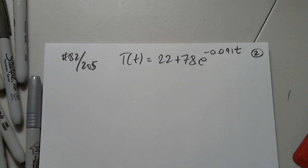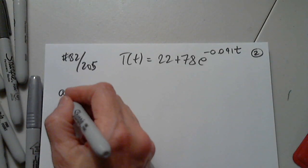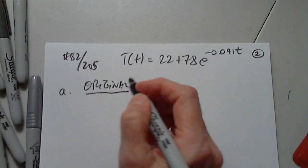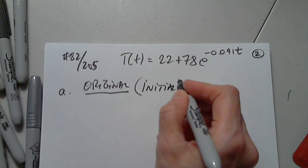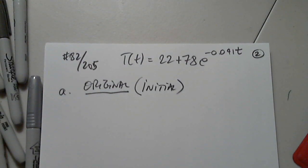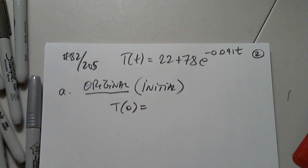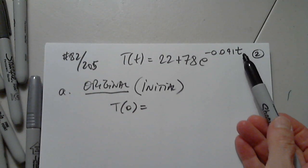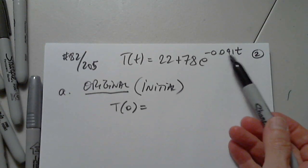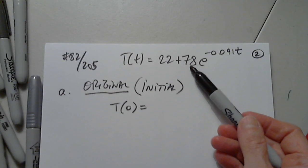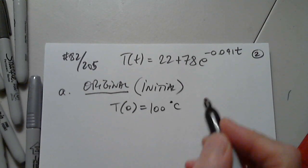How do I determine the original temperature? The original — also called initial — temperature is found at T equals 0. So T of 0: 0 times this number is 0, e to 0 is 1, so 78 plus 22 equals 100 degrees Celsius.